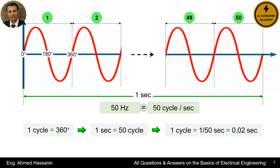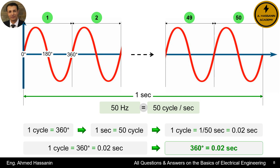Since one cycle equals 360 degrees and there are 50 cycles in one second, the duration of a single cycle is equal to 1 divided by 50 seconds, that is, 0.02 seconds. Thus, one cycle, which equals 360 degrees, corresponds to 0.02 seconds. In practice, the phase angle phi represents a period of time. Therefore, when we refer to the phase angle between voltage and current in degrees, it actually indicates a time difference between them.